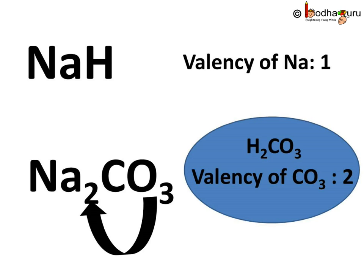Now let us find the formula for sodium carbonate: Na and CO3. We write sodium's valency after carbonate. As the valency of sodium is 1, we do not need to write it. Carbonate's valency is 2, so we write it after Na, and we get Na2CO3. We cannot reduce it anymore and we do not need to write 1 here. So, the formula is Na2CO3.